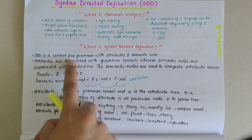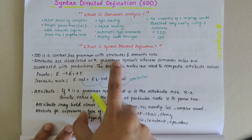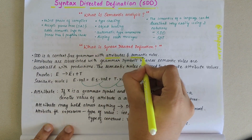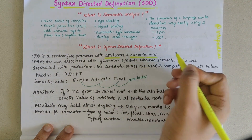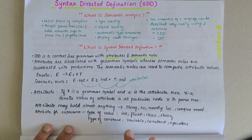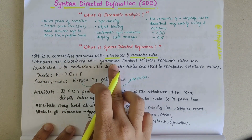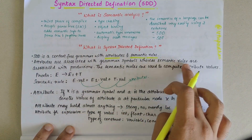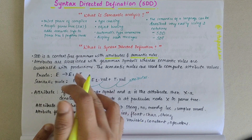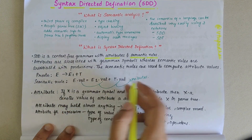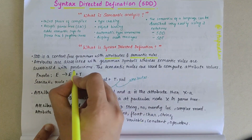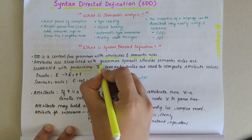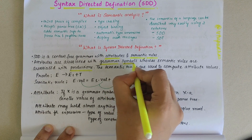SDD is a context-free grammar with attributes and semantic rules. It comprises of attributes and semantic rules. Attributes are associated with the grammar symbols, whereas semantic rules are associated with the productions.